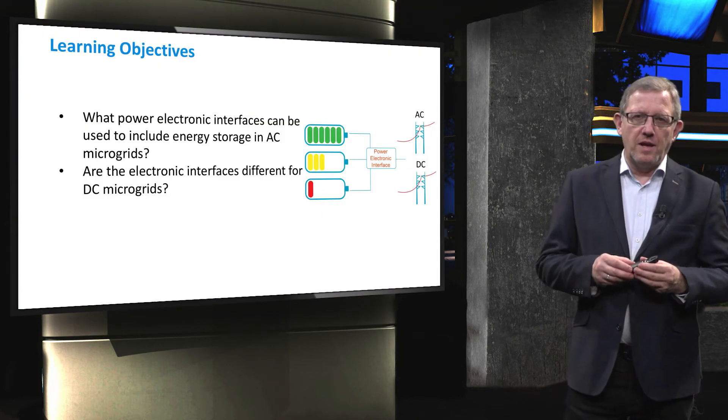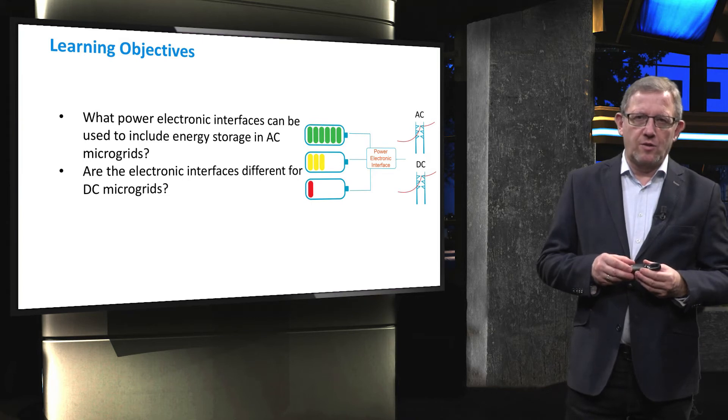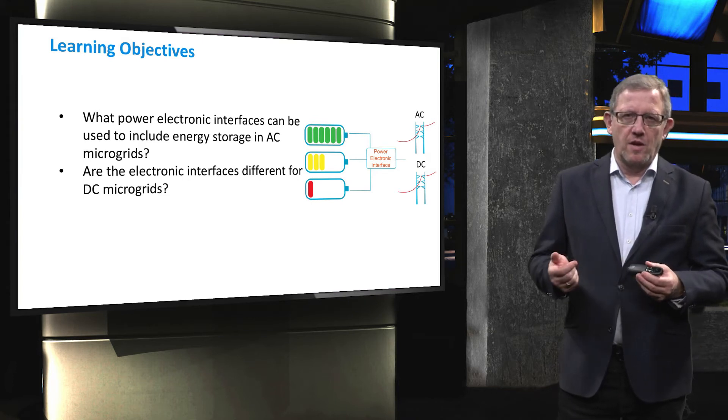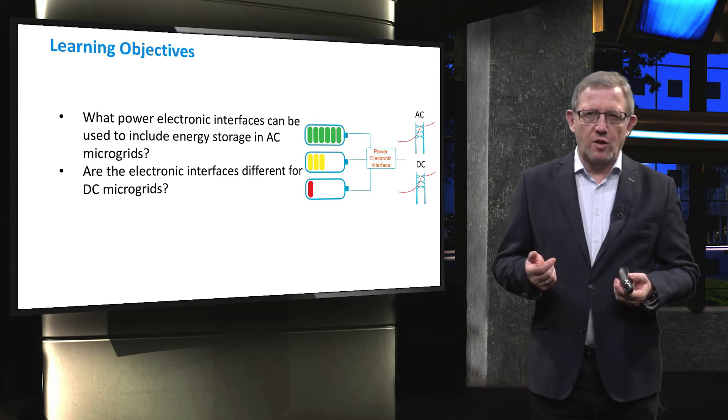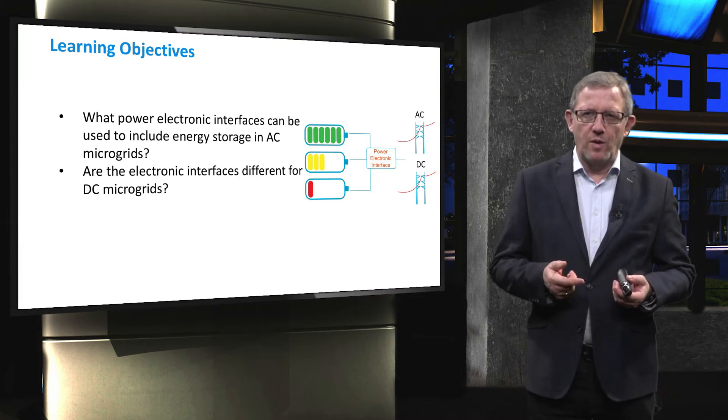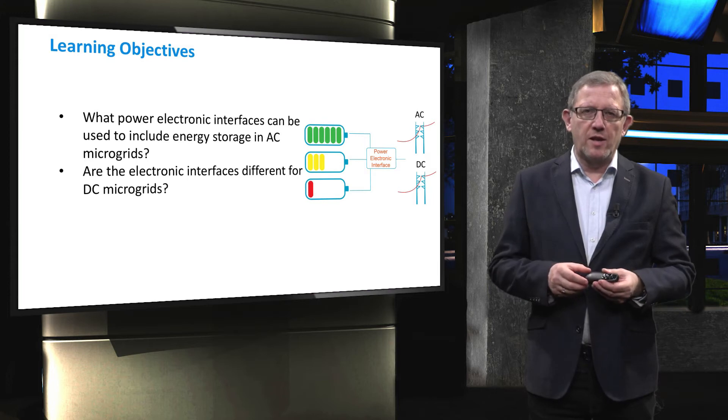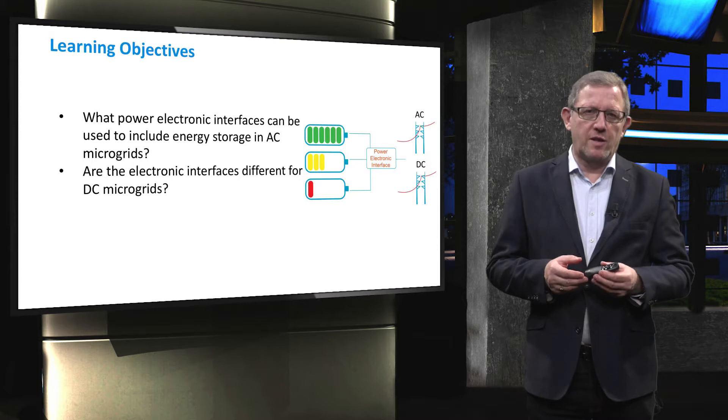The main learning objectives of today's video fall under two main questions. First, what are the possible power electronic interfaces to connect various storages like batteries, flywheel, and fuel cell to AC microgrids? And secondly, of course, how these various storages could be connected to DC microgrids?